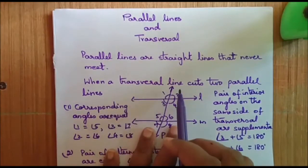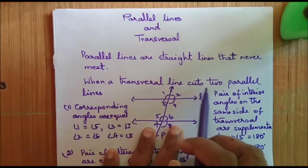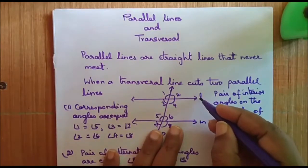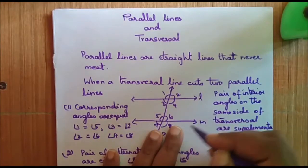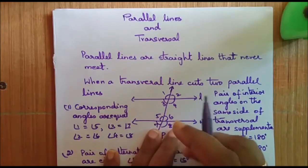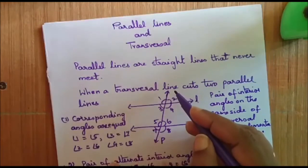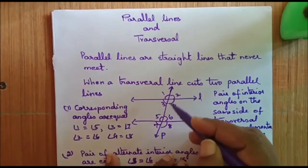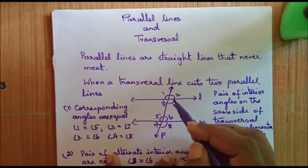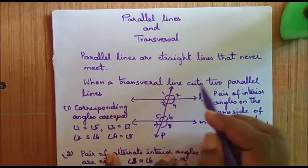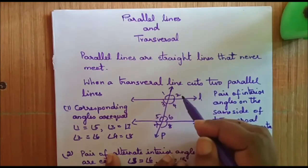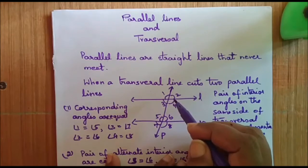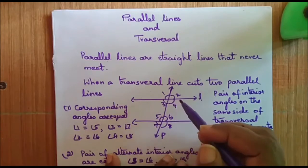When a transversal line cuts two parallel lines — given lines L and M that are parallel to each other and cut by line P, which is called the transversal line — we will see what properties arise between the angles.